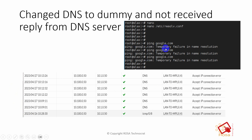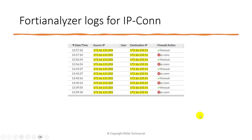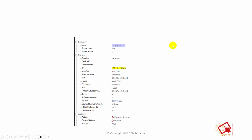Let's look at the DNS example. I did a ping to google.com and got a temporary failure in name resolution. Checking the logs, I can see it's DNS traffic with 'accept IP connection error' because there was no response from the DNS server — the response for that request was not received, so it shows as 'allowed' but with 'IP connection error.' Similarly, for an ICMP request where the response was not received, you also see 'accept IP connection error.'